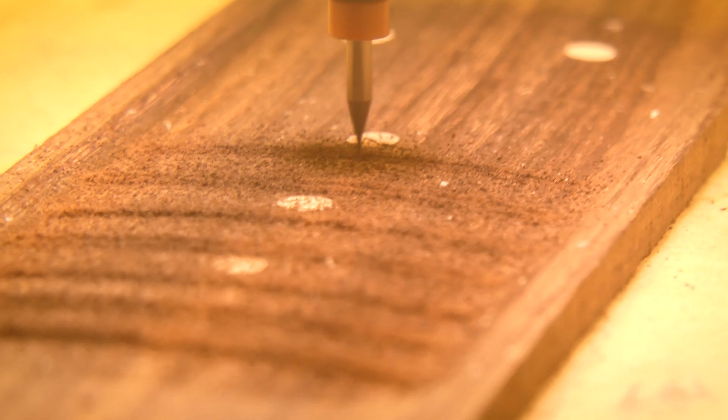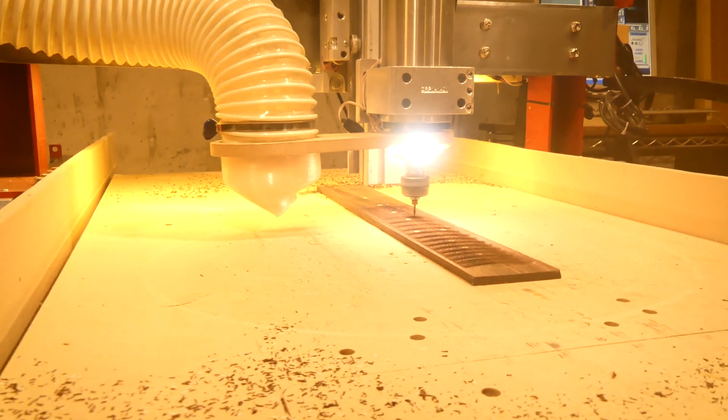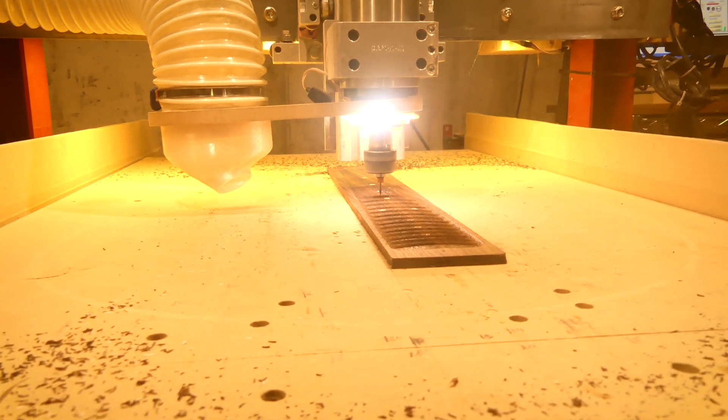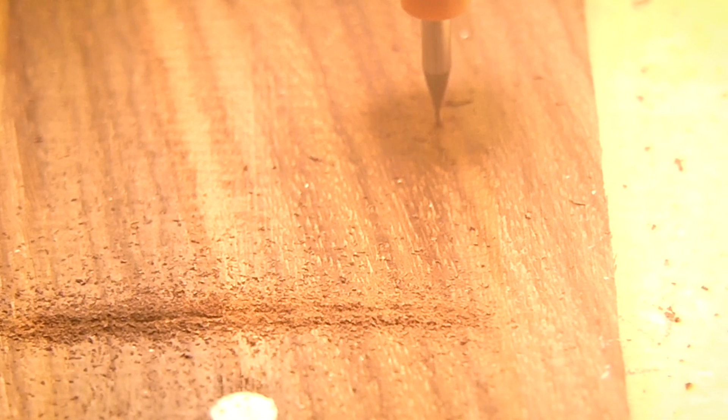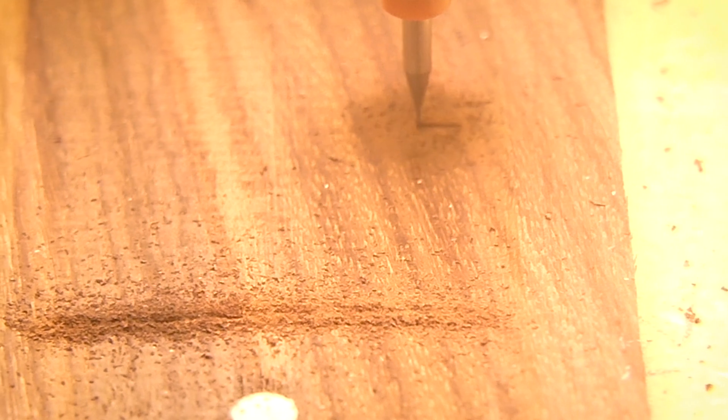I'm using a three-quarter inch ball nose mill for this on a 0.060 inch step-over scallop tool path. The large diameter of the bit, coupled with a small step-over, carves a smooth contour that requires little sanding.